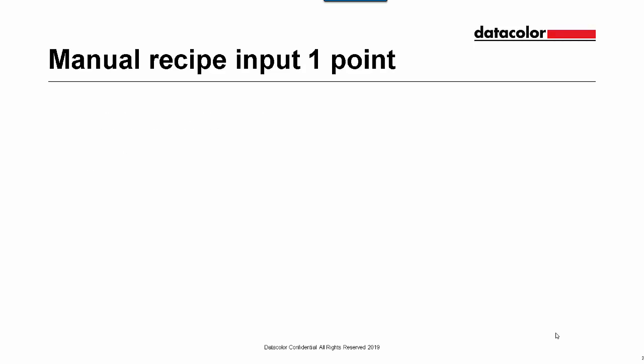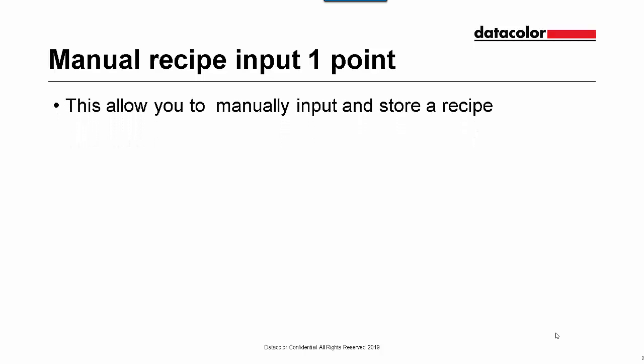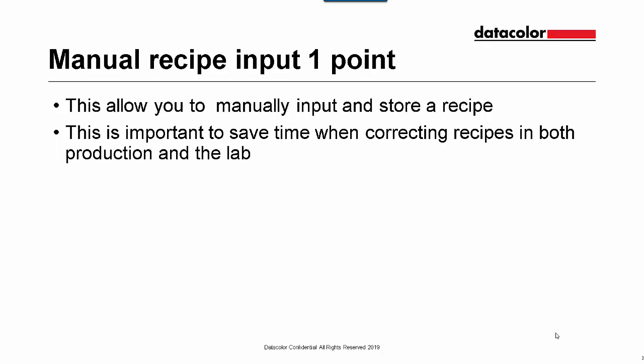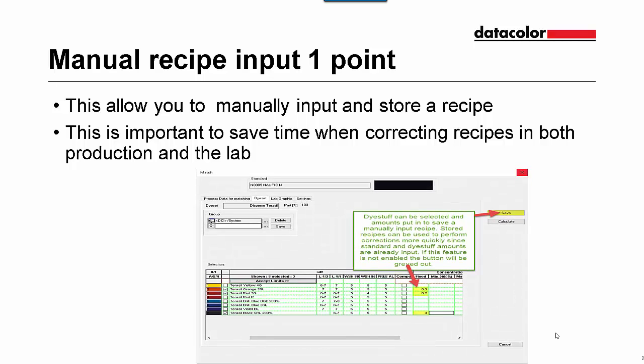Manual Recipe Input is worth one feature point. This allows you to manually input and store a recipe, which is important to save time when correcting recipes in both production and the lab. Dye stuff can be selected and amounts put in to save a manually input recipe. Stored recipes can be used to perform corrections more quickly since standard and dye stuff amounts are already input. This feature is not enabled if the save button is grayed out.